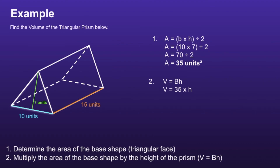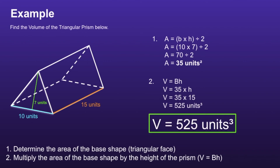Next, we have to find the height of the prism. If we look at the picture, we can see that the height will be 15 units. So now we have 35 times 15, and 35 times 15 is equal to 525 units cubed. I want you to notice that our answer is cubed — that's what that little 3 means after the units. So the volume of the triangular prism is 525 units cubed.